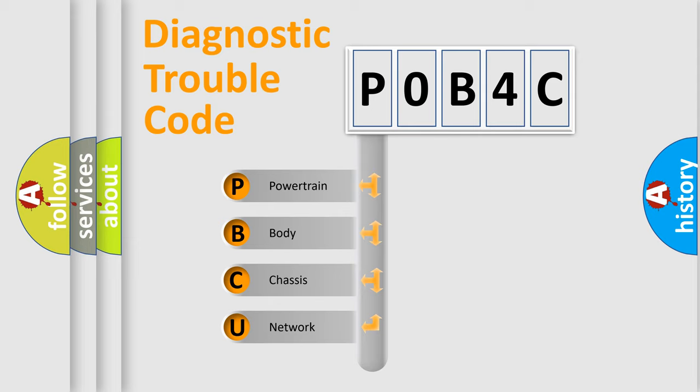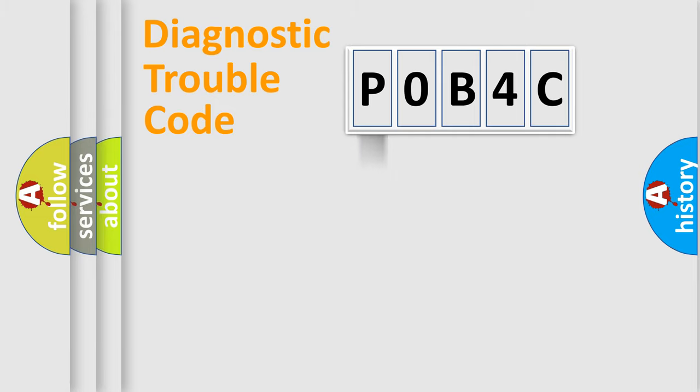We divide the electric system of the automobile into four basic units: Powertrain, Body, Chassis, and Network. This distribution is defined in the first character code.